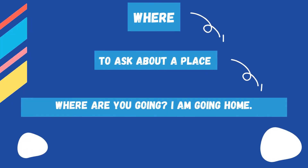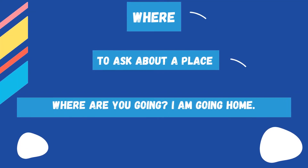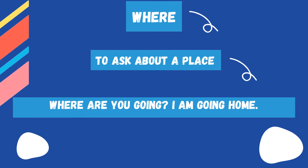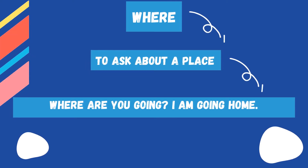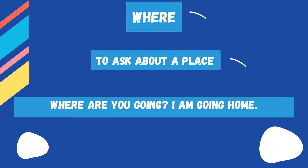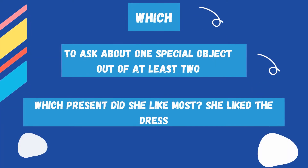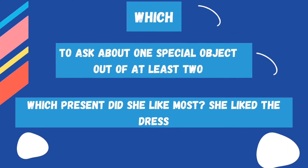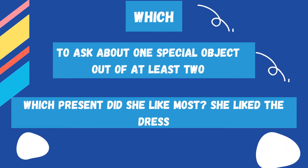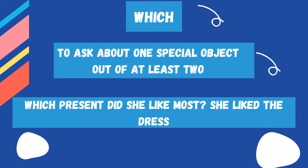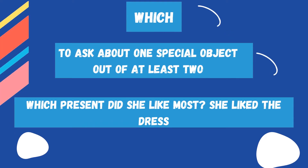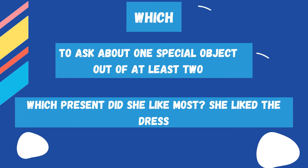Where — to ask about place. Example: 'Where are you going?' — 'I am going home.' Which — to ask about one special object out of at least two. Example: 'Which present did she like most?' — 'She liked the dress.'